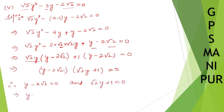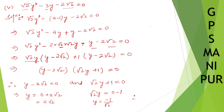So therefore, y minus 2 root 2 equal to 0, and root 2 y plus 1 equal to 0. So I can write down: y is equal to 2 root 2. And for the other one, root 2 y equals 0 minus 1, so y is equal to minus 1 divided by root 2. Therefore, y is equal to 2 root 2 and minus 1 by root 2.